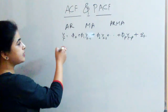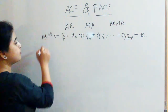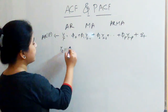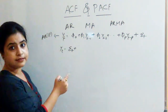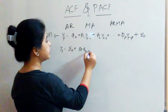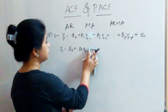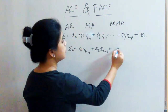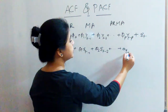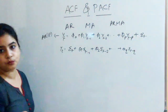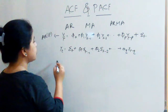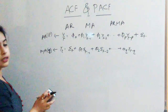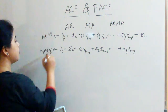So here AR is of order p. Now how does moving average look like? It is epsilon-t plus theta-1 epsilon-t-minus-1 plus theta-2 epsilon-t-minus-2, plus let's say theta-q epsilon-t-minus-q. This is MA of order q.